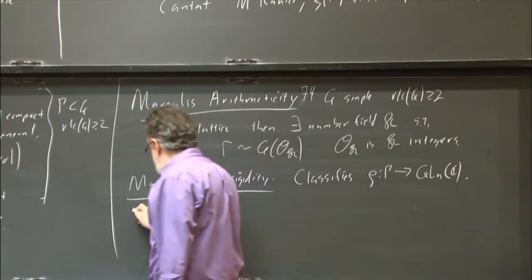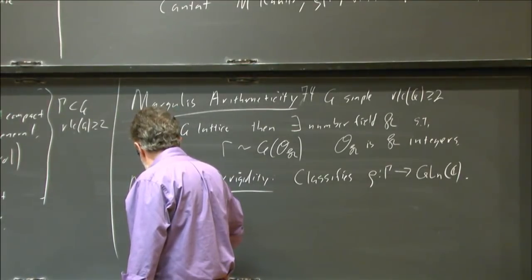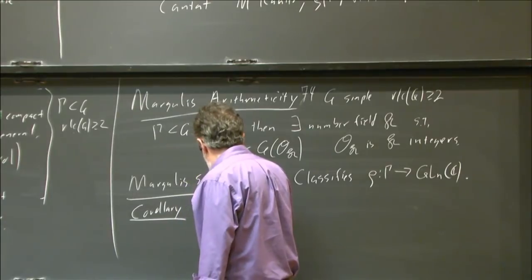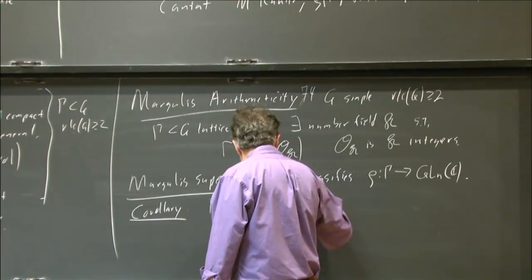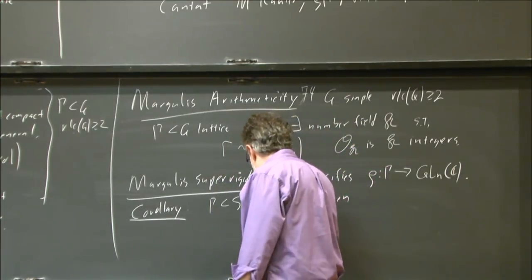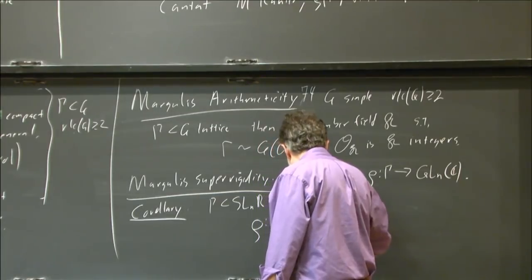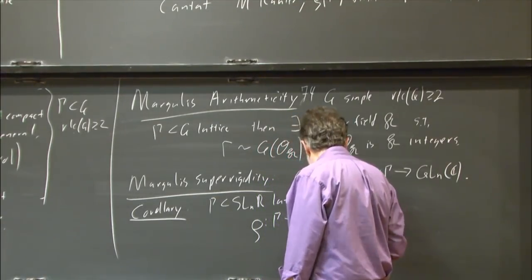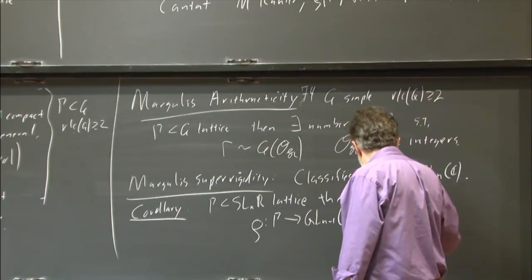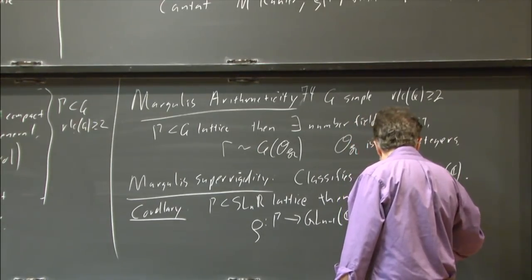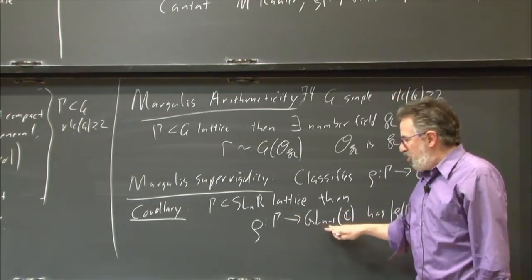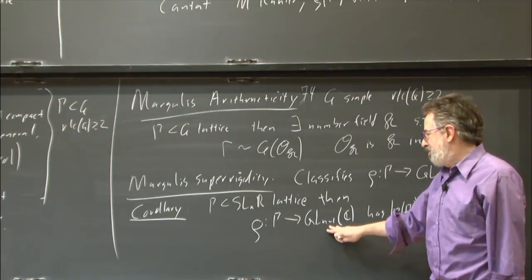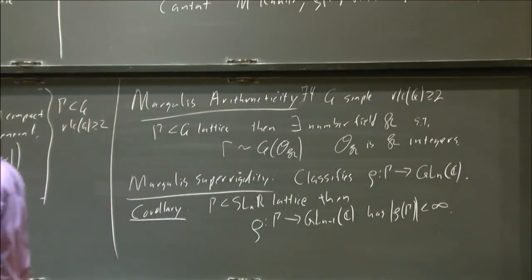I'll state a corollary that more directly inspires the theorem: if Gamma in SL(N,R) is a lattice, then rho from Gamma to GL(N-1,C) has rho of Gamma finite. So this is a linear version of that theorem—if I look at low-dimensional linear representations, they're all trivial, or at least finite. The main theorem is saying the same thing for a certain type of non-linear representation.